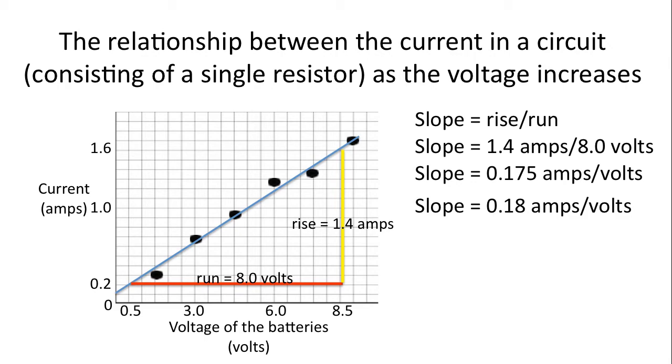This is the reason why I ask you to choose the points very far apart. If you choose the points too close together, then for example, our rise may only be 0.8 amps. If the rise was only 0.8 amps, that's only one significant digit. And then our slope can only have one significant digit. So the further apart you choose those two points, the more significant digits our slope can have.